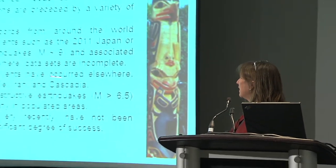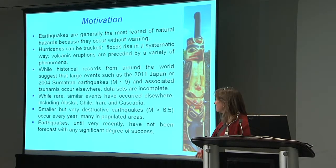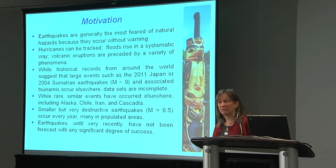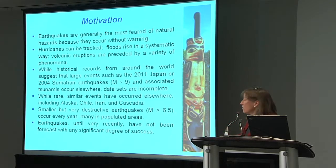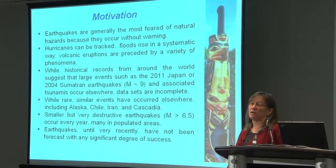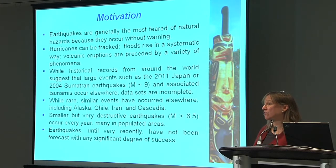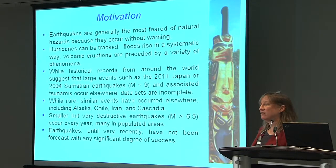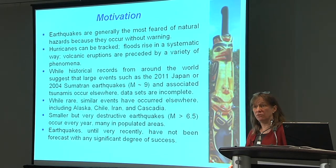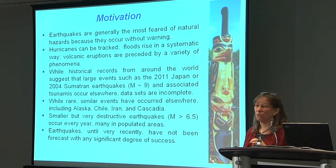Earthquakes occur in many, many places. Large earthquakes occur in Alaska, Chile, Iran, and Cascadia. In Canada, we also have small to moderate earthquakes in the east and potential for larger events. The damage and destruction from earthquakes has historically been unpredictable. While today we know what the damage might be, we still have a very hard time knowing when an earthquake is going to occur, and 'when' turns out to be the hardest part. A lot of work in the last 10 to 15 years has focused on using large datasets of small events to tell us about the precise location and timing of upcoming events.